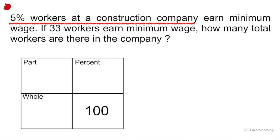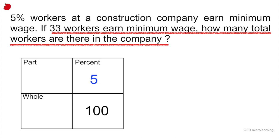So it tells us 5% of workers at a construction company earn minimum wage, so that 5% is going to go under our percent box right there. Then it tells us if 33 workers earn minimum wage, how many total workers are there in the company? So they're telling us specifically the group within the whole company that earns minimum wage, so the part, is 33 workers, part of the company and not the whole company.